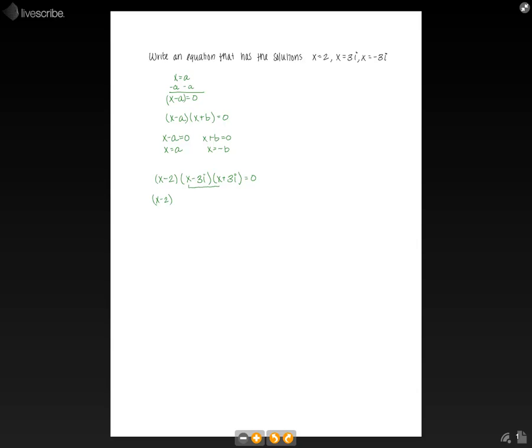So we're going to FOIL that out. We're going to do the first terms, which is x squared. The outside terms, which is x times 3i, inside terms, which is negative 3i and x, and then the last terms, which is minus 9i squared.